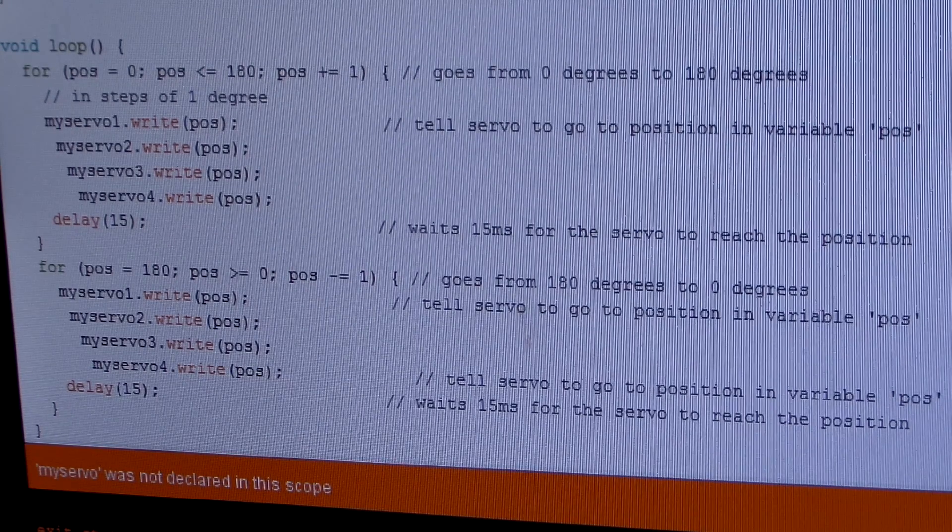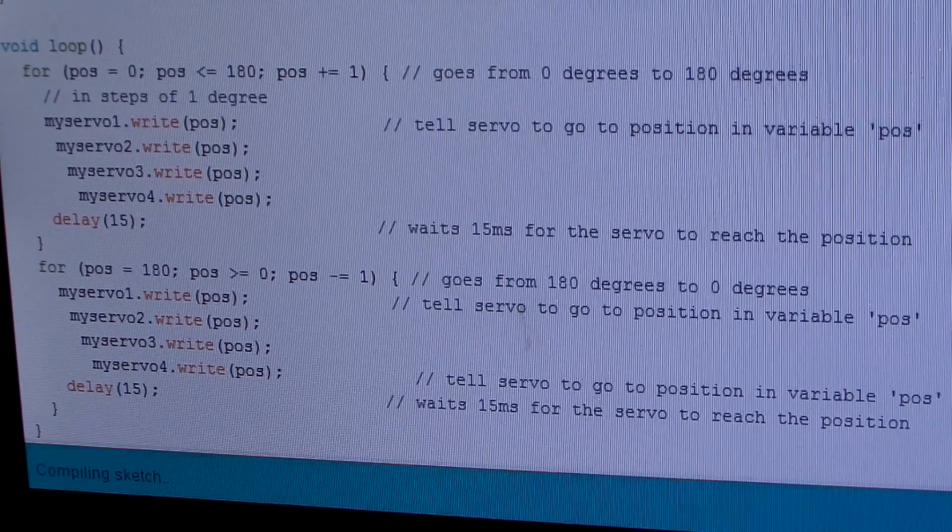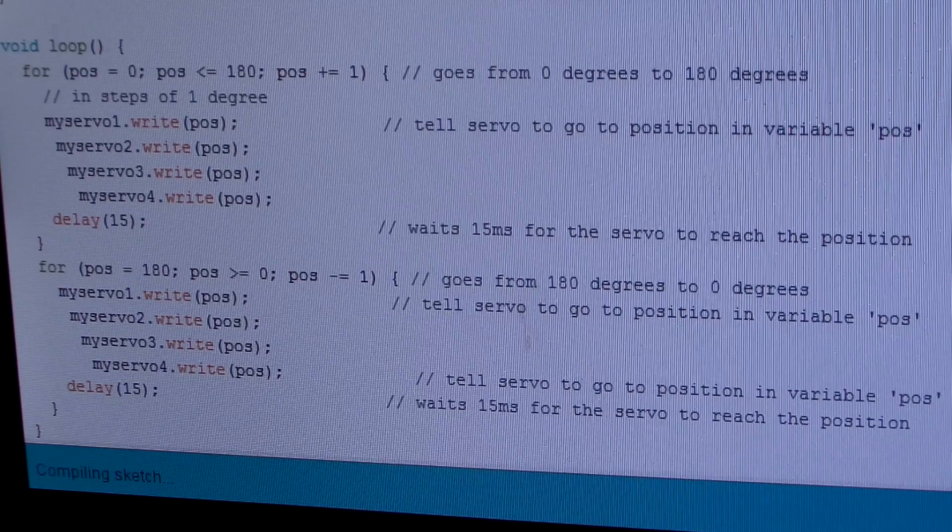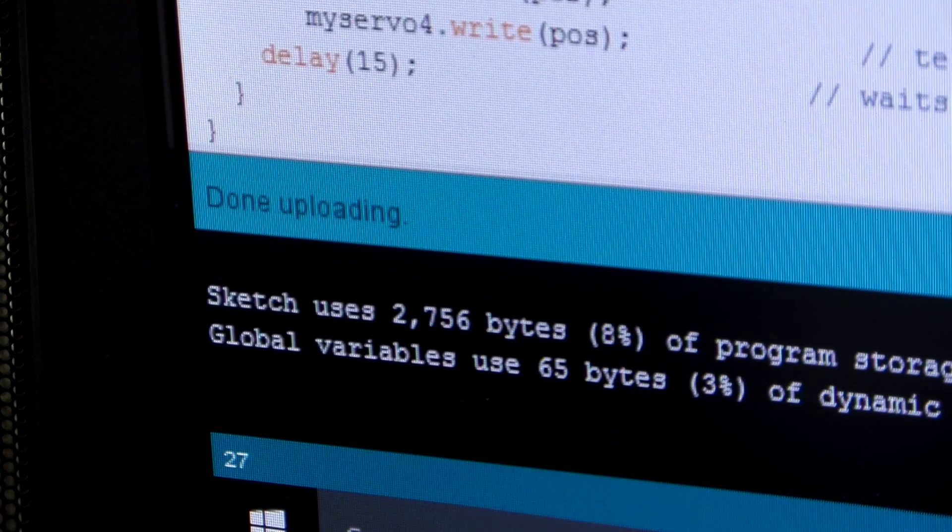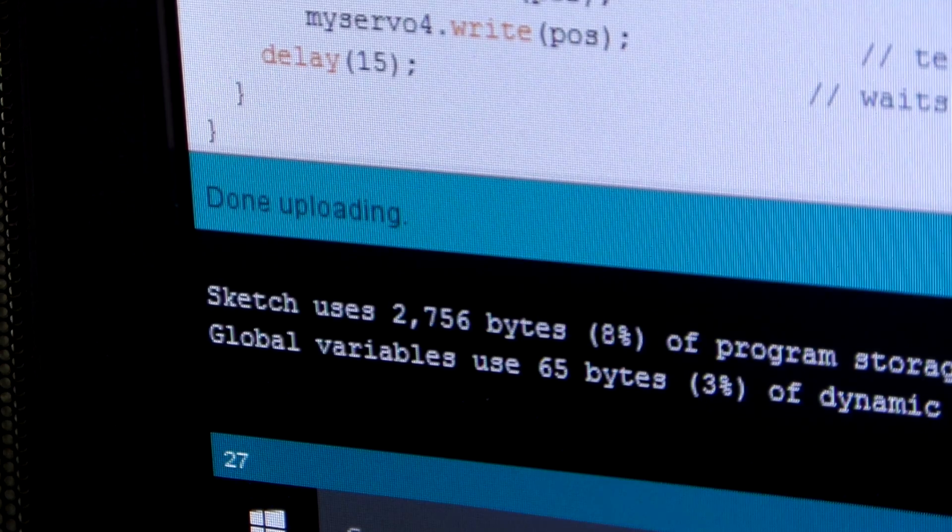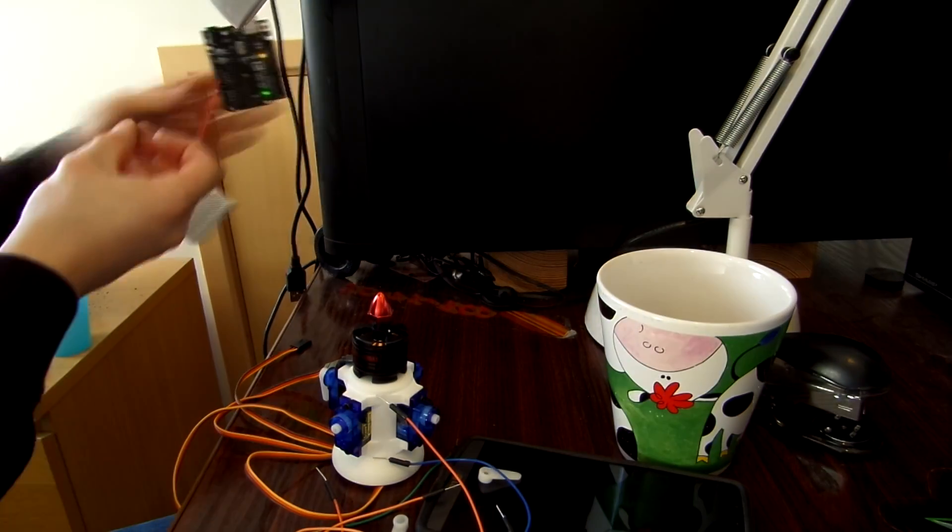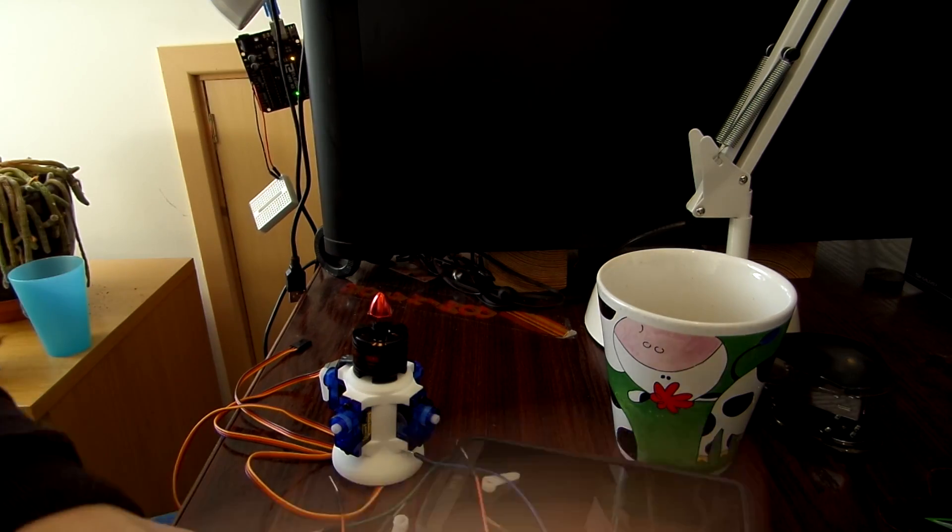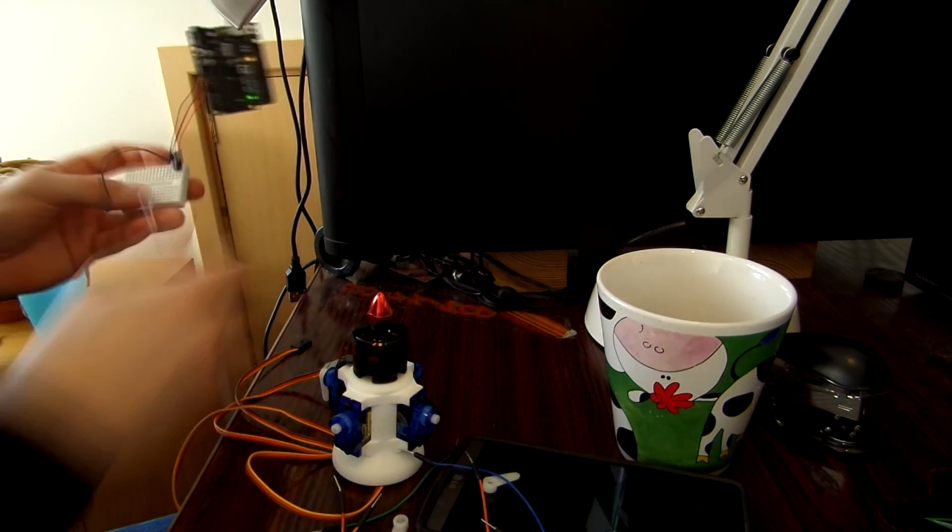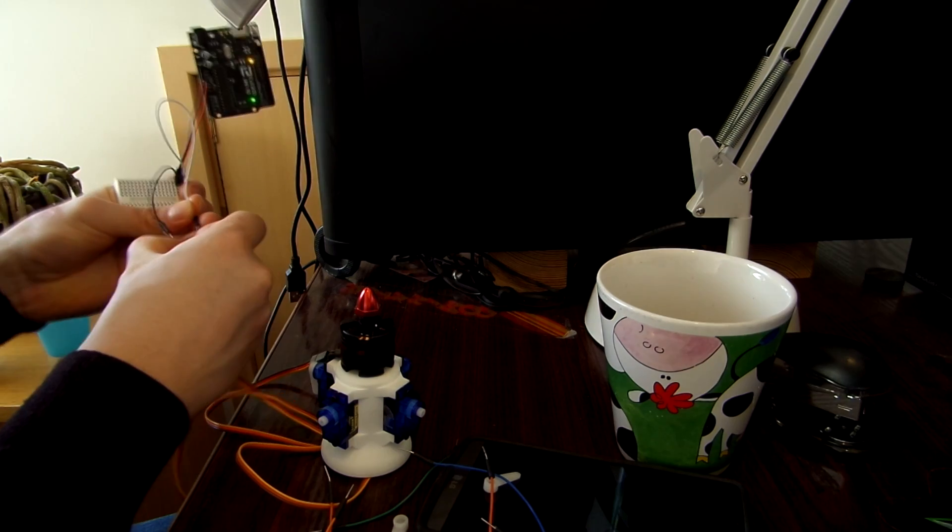So I just ran a little bit of code to make sure that I didn't damage any of the servos on the way in. It's just a sweep example sketch which you should be able to find in your Arduino IDE. So I tested each servo individually to start off with just to make sure that they all worked okay and they were all fine.